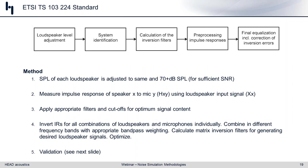The third step is to apply appropriate filters and cut-offs so we're only looking at the primary signal content of interest. The fourth step is where the magic happens: we invert all of those impulse responses and combine them in different frequency bands with the appropriate weighting. Once we do the matrix inversion filters, we apply those to each of the loudspeakers, do an optimization step, and finally a validation. This is relatively sophisticated mathematics that software will typically handle for you, but it is a lot more sophisticated because we now include phase information and time domain information in the EQ phase, unlike before.